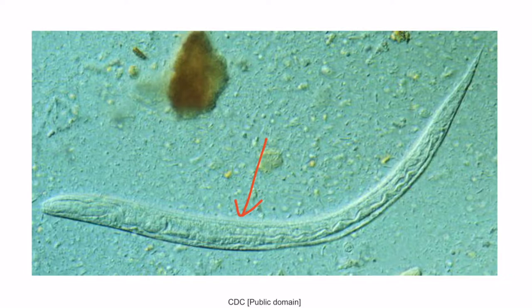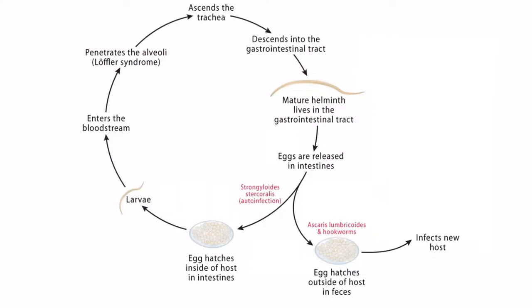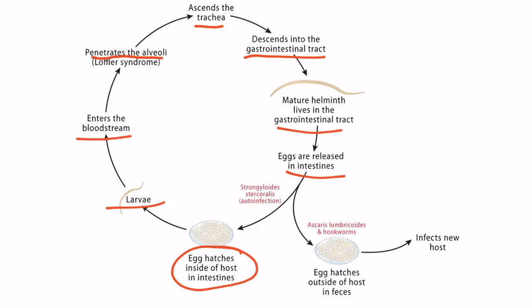Before we go any further, let's take a second to conceptually understand the life cycle of Strongyloides. You should know that Strongyloides larvae can infect the host by penetrating the skin. Once the skin has been penetrated, larvae enter the bloodstream, penetrate the alveoli, ascend the trachea, and descend into the gastrointestinal tract where mature helminths remain. Here they release eggs into the intestines, and in the case of Strongyloides, some of the eggs hatch inside of the host within the intestines. This is unique because the parasite burden can continue to escalate as more and more parasites take up residence within the gastrointestinal tract, and this cyclic process is termed auto-infection.